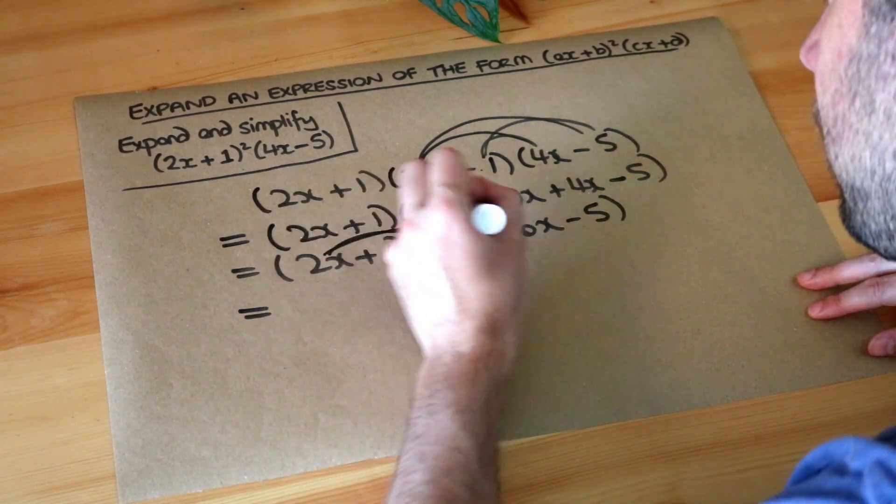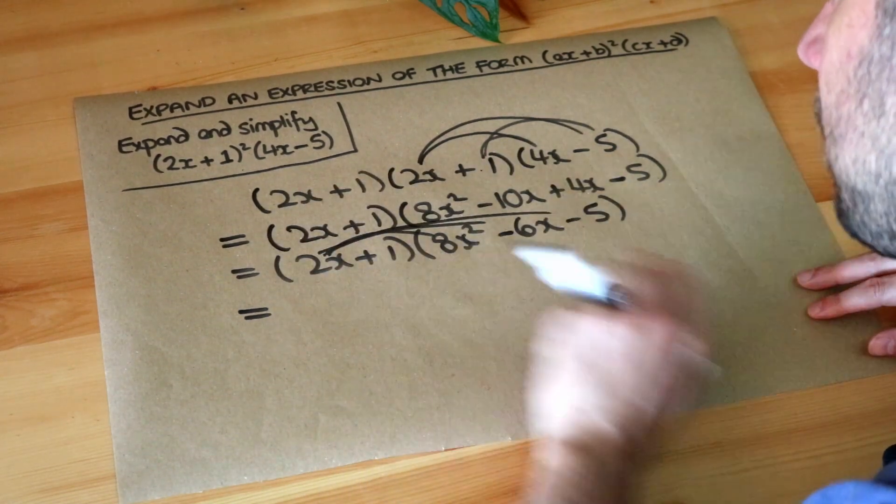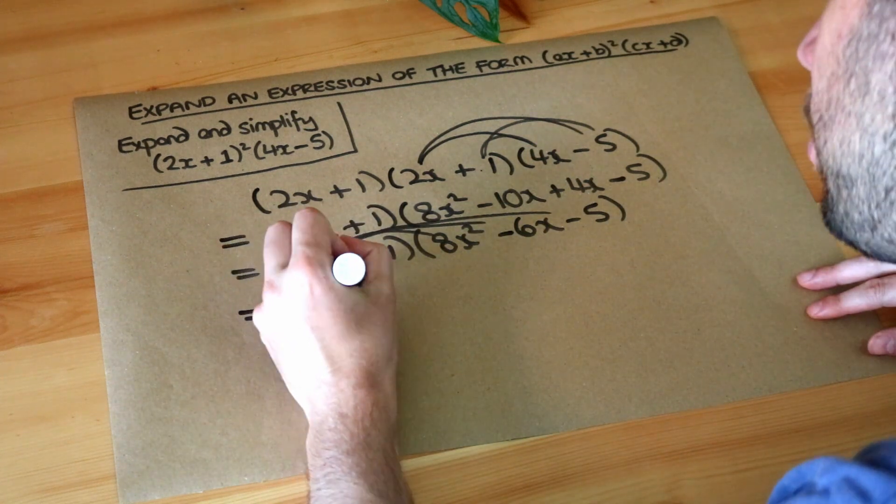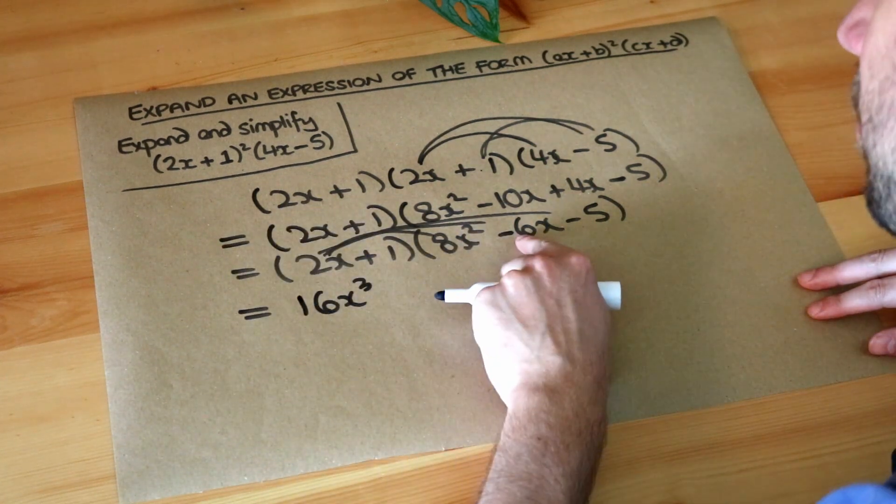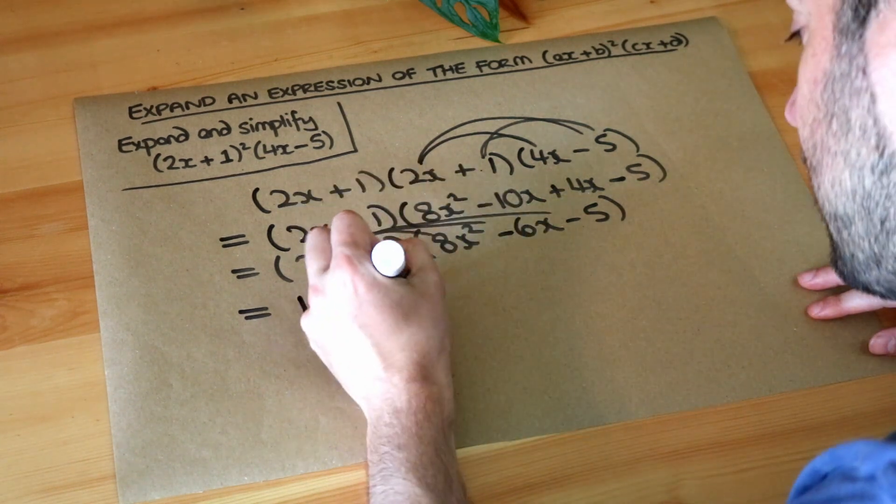So 2x times each of these. So 2x times 8x squared which is 16x cubed. 2x times minus 6x. Well positive times negative is negative.